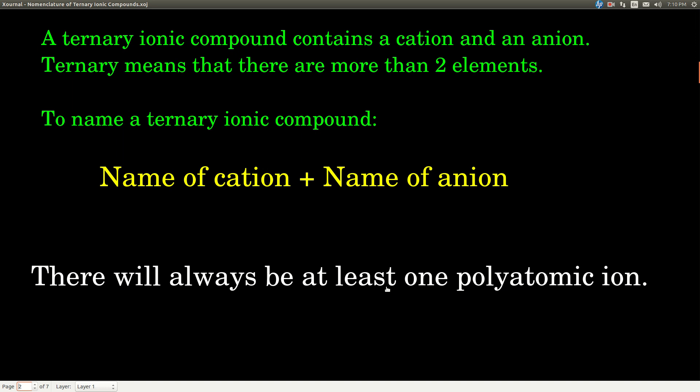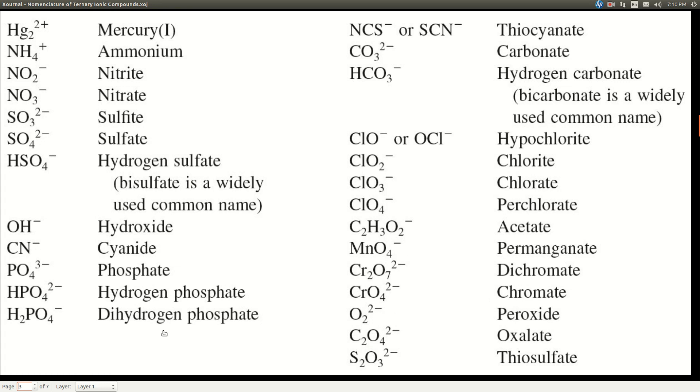The difference between ternary ionic compounds and binary ionic compounds is that in a ternary ionic compound, there will always be at least one of what we call polyatomic ions. So what's a polyatomic ion? Fair question. Well, these are polyatomic ions.